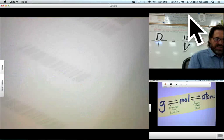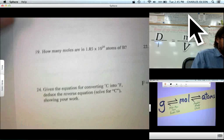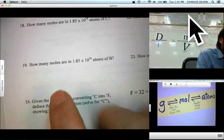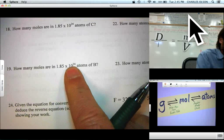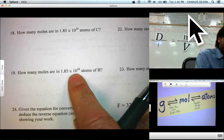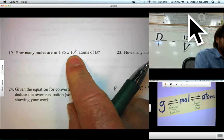Question number 2 will be number 19, a different question. How many moles are in 1.85 times 10 to the 24th atoms of boron? Wow, that's a big number. Of course, atoms are very tiny.